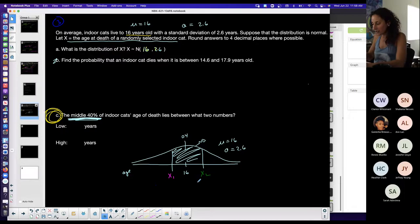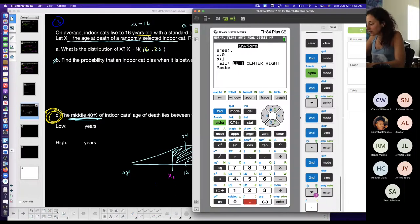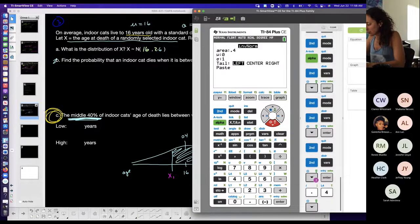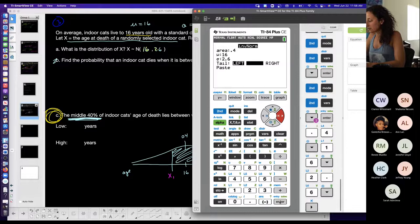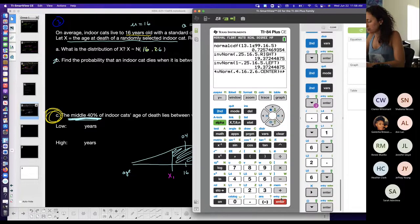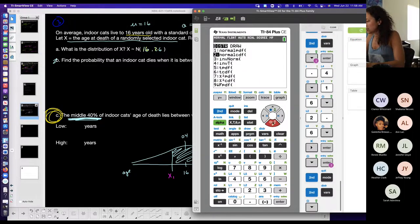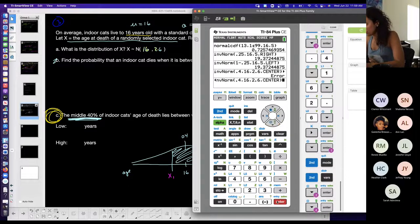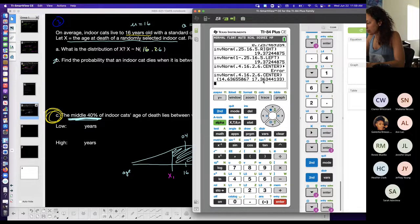Being that you guys don't have that one option on the calculator, I'm going to show you on the calculator real quick. If you have this option, the area is 0.4, the mean is 16, and the standard deviation is 2.6, and you tell it that it's the center. It gives me the two values: 14.6 is the lower end and 17.36 is the upper end.